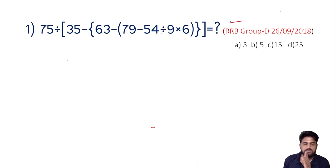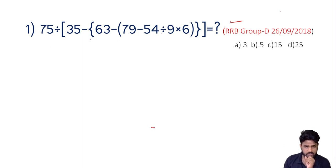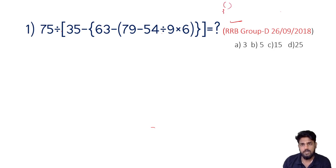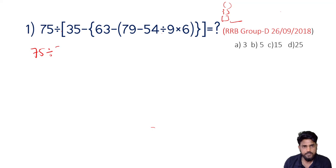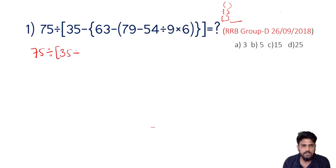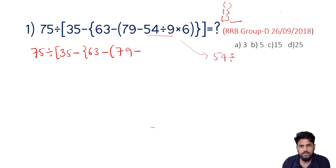It contains the topic wise questions. This is the 1st gendered power, 2nd gendered power, 3rd gendered power, 79 minus. This is simplification: 59 divided by e, 54 divided by 9.